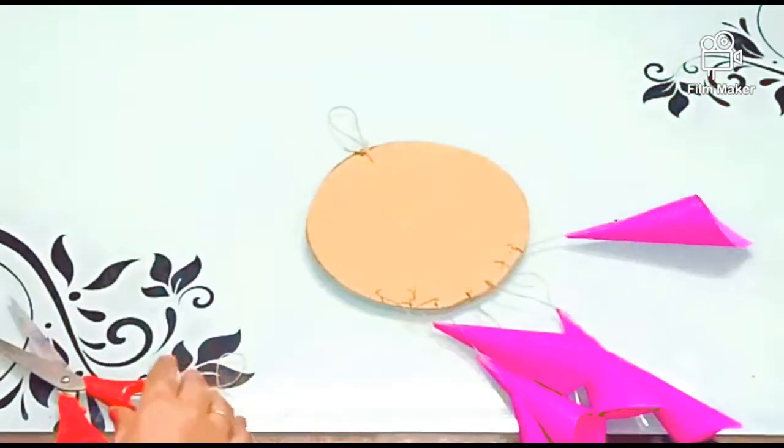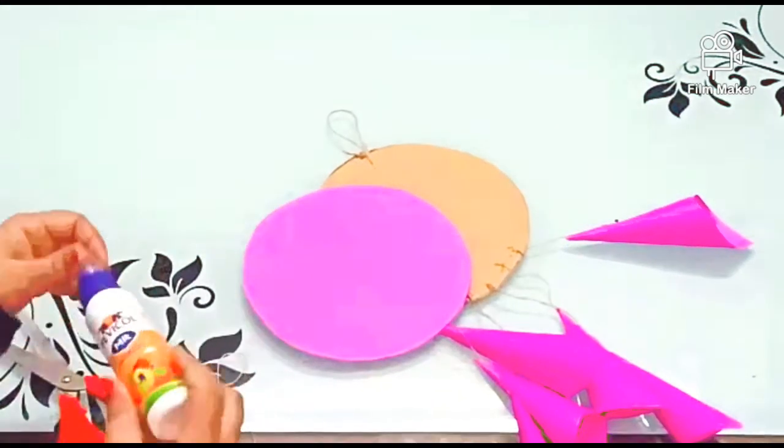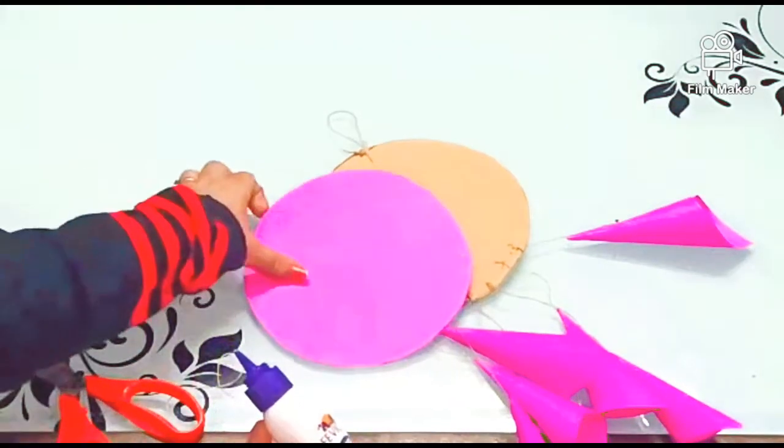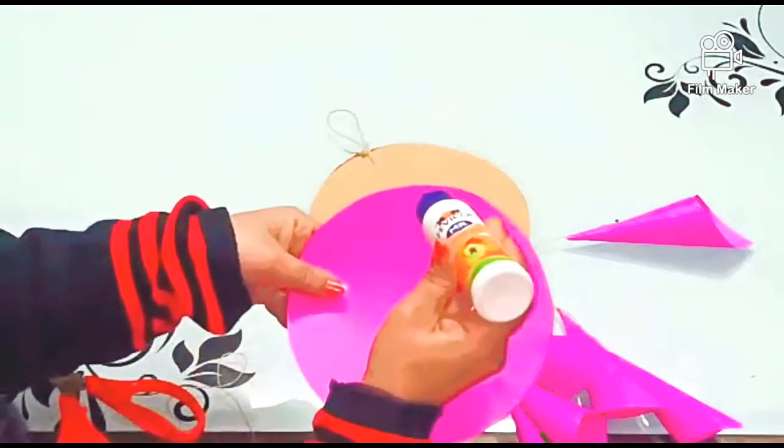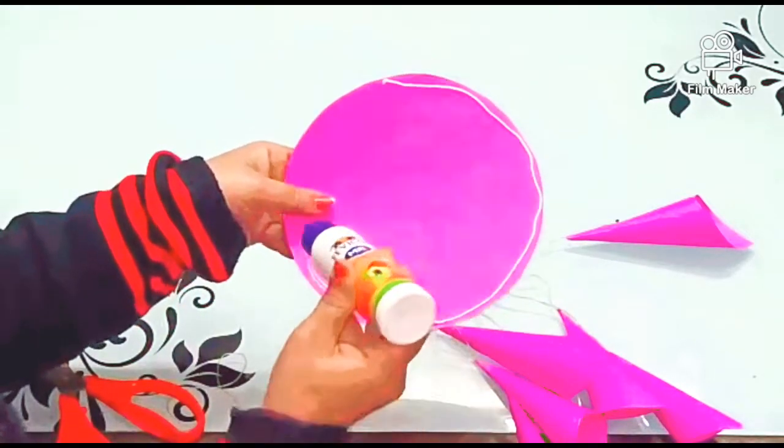See, we have tied the knot. Now we will take two round circles. First one, we will put the glue and paste it on the cardboard so that we can cover it.